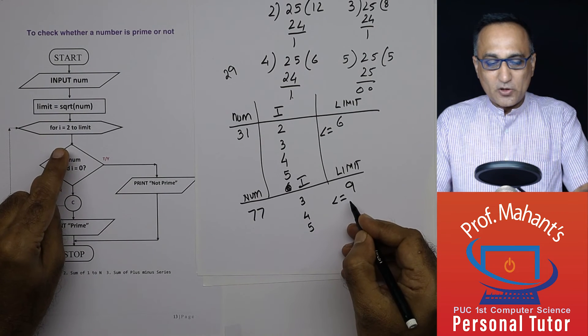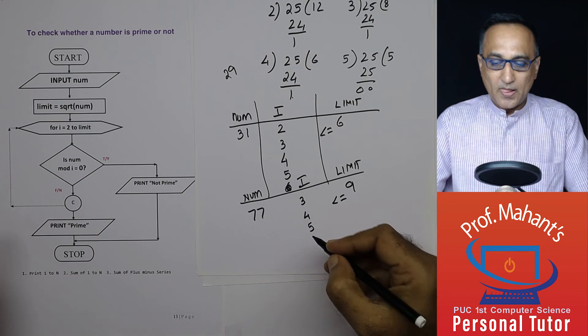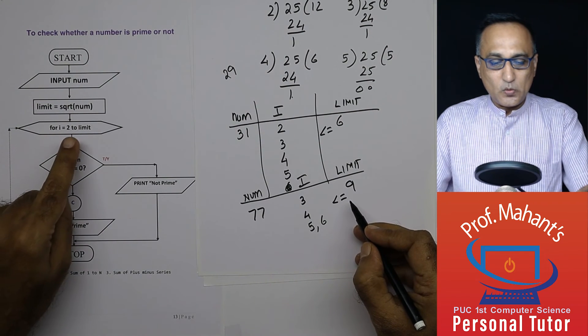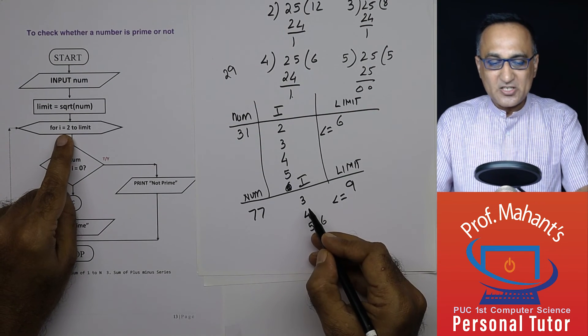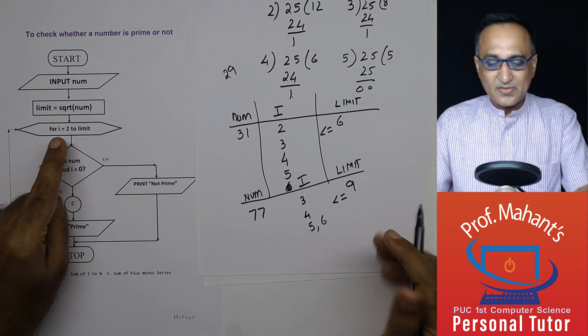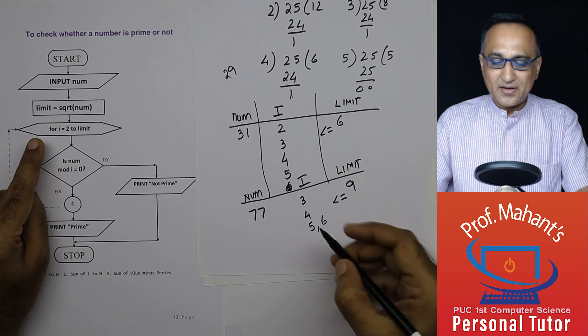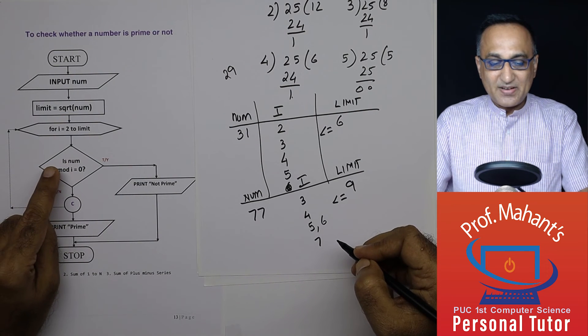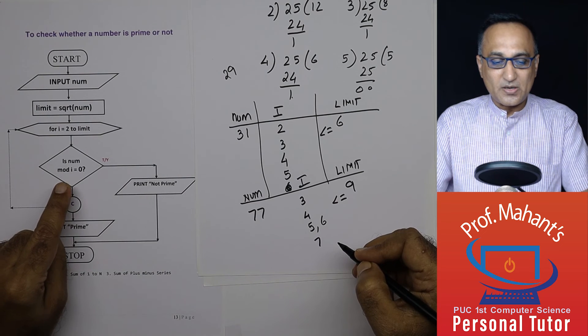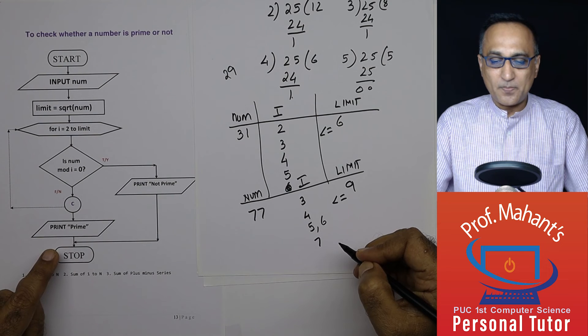Now 5 is still less than or equal to 9. 77 mod 5 is it equal to 0? No. i then increases by 1. It becomes 6. 6 is still less than or equal to 9 because I am doing it between the range 2 to 9. Whereas i is still 6. So it is between 3 to 9. 77 divided by 6 is 0? No. False. We go back here. i becomes 7. 77 divided by 7. 11 into 7 is 77. So the remainder is 0. So it will say 77 is not a prime and it will come here and stop.